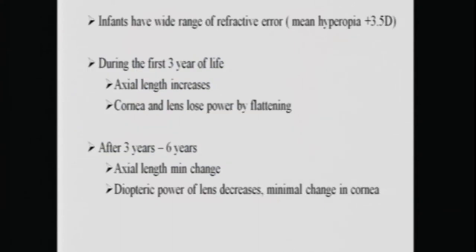The process of emetropization: the infant's eye moves through a wide range of refractive errors. At start in infancy, although majority of children are hyperopic with a mean of about three to four diopters, they can even be myopic in early infancy. So there is a wide range of refractive errors a child may have in infancy, and during the first three years of life there is significant movement which may initially increase the hyperopia and then progressively move towards emetropization.